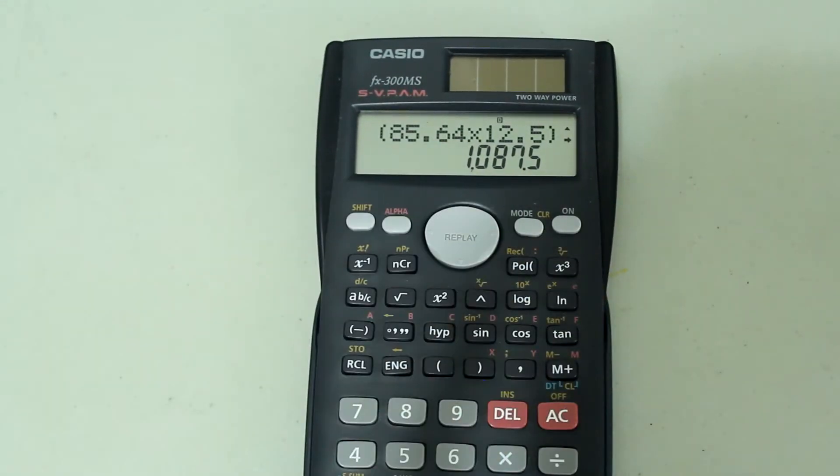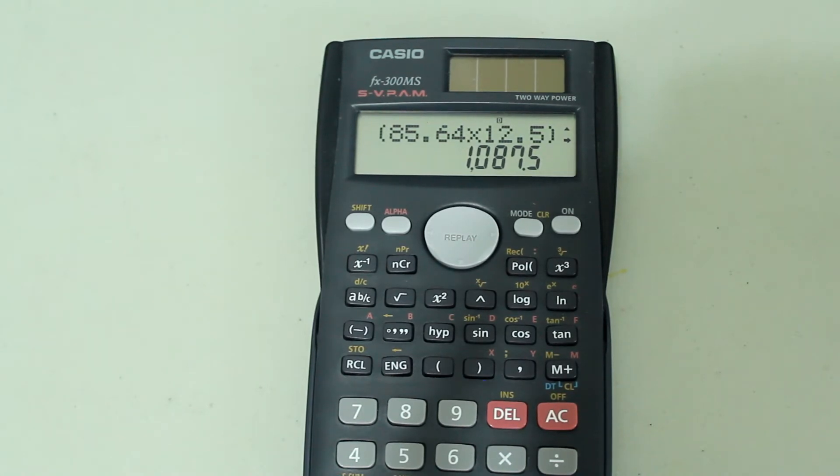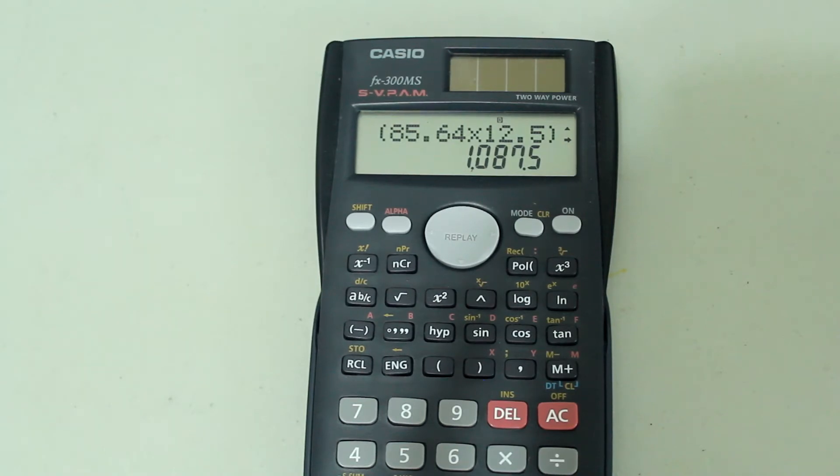And then I get the answer. Then I realized that I actually meant to type in 13.5 instead of 12.5. Instead of typing in the whole expression again, which can be a bit tedious, especially if it's a longer entry,